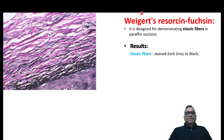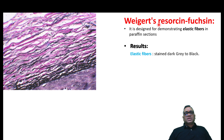Weigert's resorcin-fuchsin stain is very important. It is used in cardiovascular pathology to identify elastic fibers in paraffin sections. The elastic fibers will appear dark gray to black in color. You can see these are the elastic fibers — dark gray to black in appearance in Weigert's resorcin-fuchsin stain.